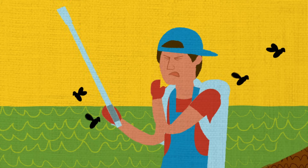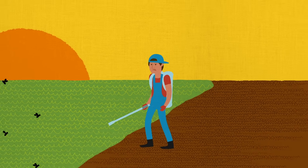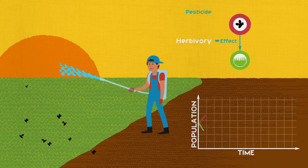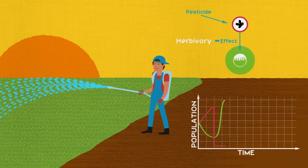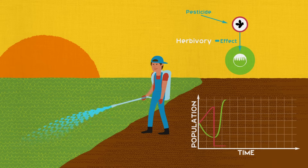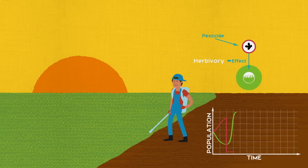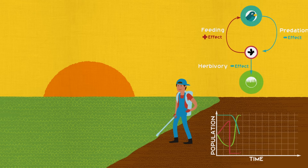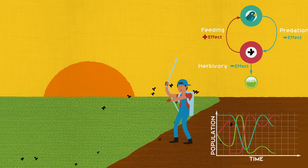Feedback processes might seem counterintuitive because many of us are used to more predictable linear scenarios of cause and effect. For instance, it seems simple enough that spraying pesticides would help plants grow by killing pest insects. But it may trigger a host of other unexpected reactions. For example, if spraying pushes down the insect population, its predators will have less food. As their population dips, the reduced predation would allow the insect population to rise, counteracting the effects of our pesticides.